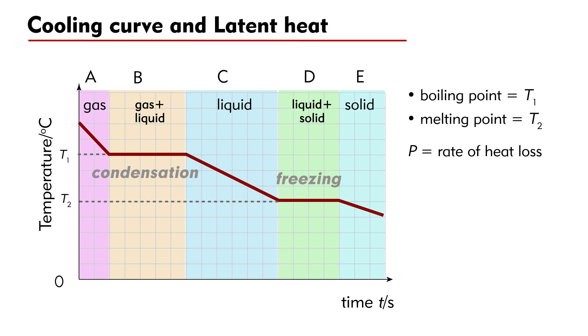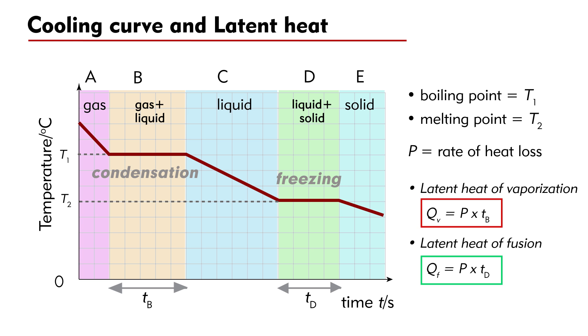Suppose the rate of heat loss is P. From the time intervals Tb and Td, we can calculate the latent heat of vaporization and latent heat of fusion of the object. The latent heat of vaporization is Qv = P × Tb, and the latent heat of fusion is Qf = P × Td.